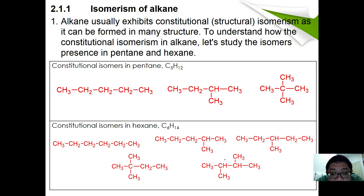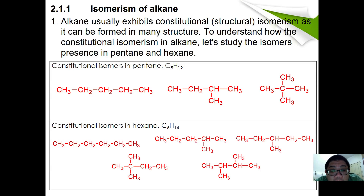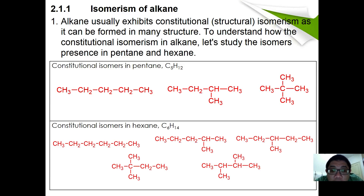For hexane (C6H14) there are five isomers: hexane, 2-methylpentane, 3-methylpentane, 2,2-dimethylbutane, and 2,3-dimethylbutane. Before we end this lesson, consider whether any of these exhibit optical isomerism. If you look carefully, none of C5H12 or C6H14 can give optical isomerism. How many carbons must an alkane have in order to exhibit optical isomerism? We'll continue in the next lesson.